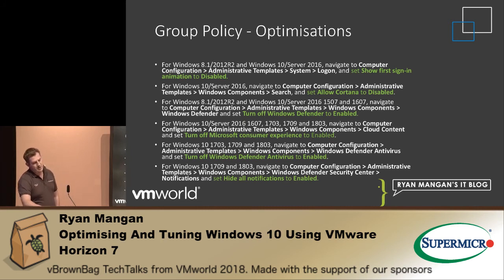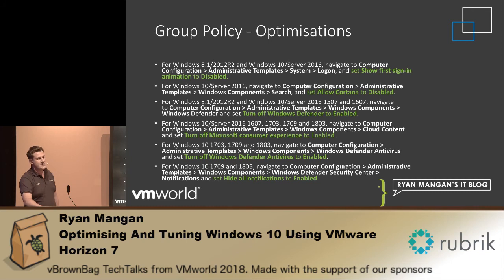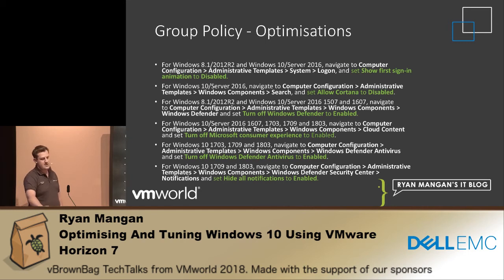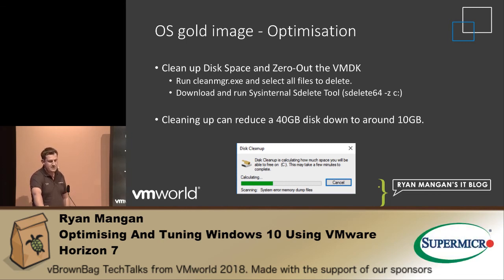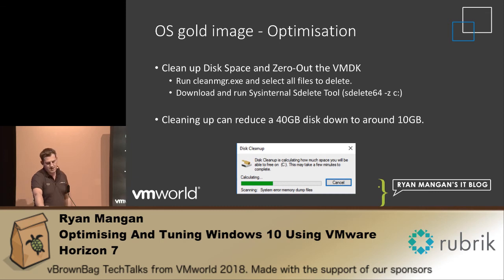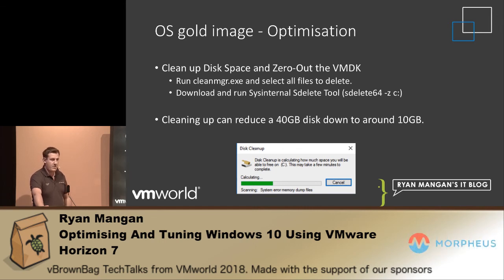Group policy with Windows 10 — the challenge is that Windows 10 was designed for desktop PCs, not for VDI or session-based delivery. You need to get in there and remove things from 'show first sign-in' all the way down to 'hide all notifications', because all of these individual components have an impact on the virtual infrastructure. Disk cleanup is also a biggie that many people miss. Once you've done everything on the OS, run Disk Cleanup first, then use the Sysinternals SDelete tool, which zeroes out the disk and cleans up space, allowing you to shrink the VMDK — bringing a 40 GB disk down to 10 GB.